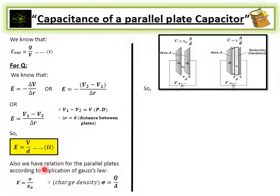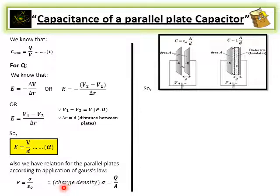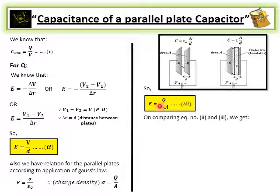We also have a relation for the parallel plate combination according to the application of Gauss's law. For two opposite infinite sheets of charges, the relation derived from Gauss's law gives E = σ/ε₀, where σ is the charge density. We know that charge density σ = Q/A. So we can write E = Q / (ε₀ × A). This is equation number 3.